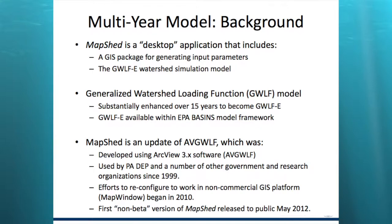What GWLFE means is it takes a chunk of your watershed, looks at the land cover, soils, and slopes, makes estimates about the number of animals on that land cover, and applies a load of pollutants — sediment, nitrogen, and phosphorus — to the water coming off that chunk of land. It does that for every chunk of land in your area of interest and spits out the net yield at the bottom. It takes a parcel of water, attaches the pollutant load to it, and pushes it off down the network.